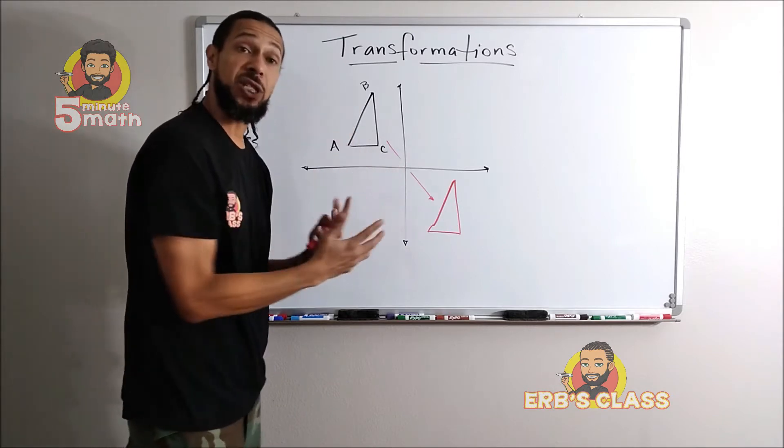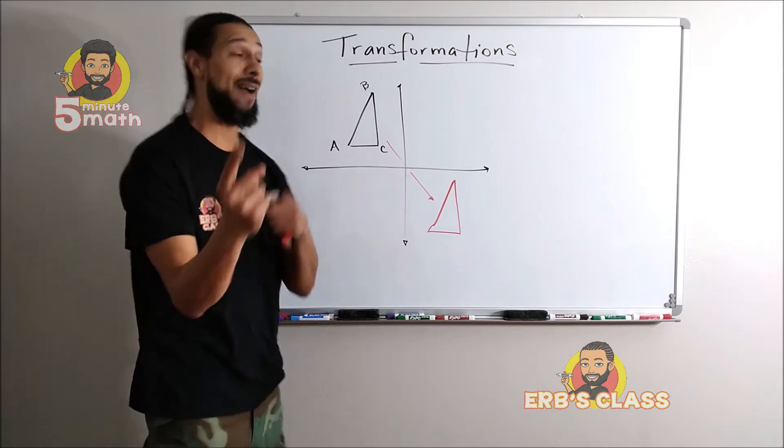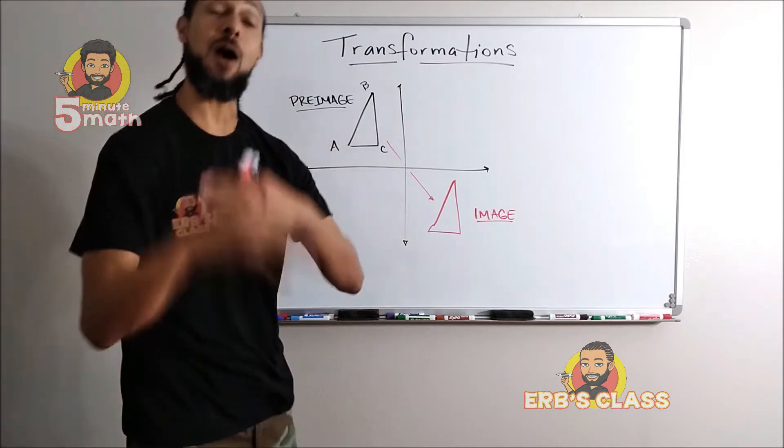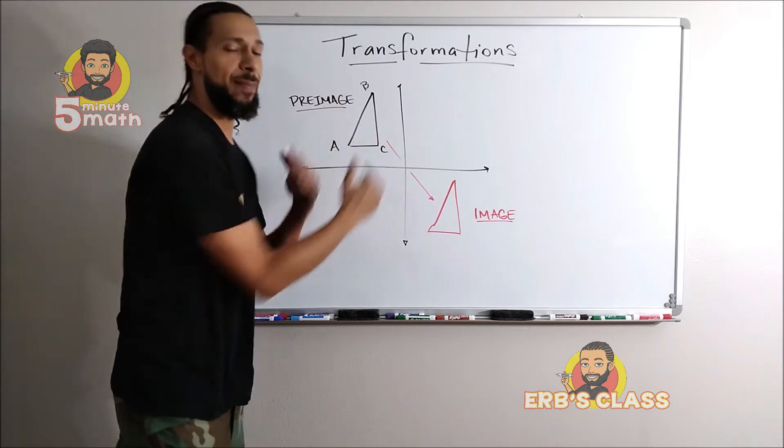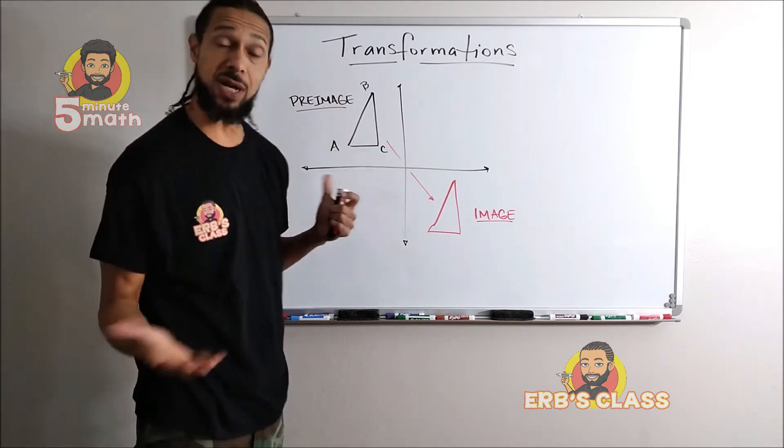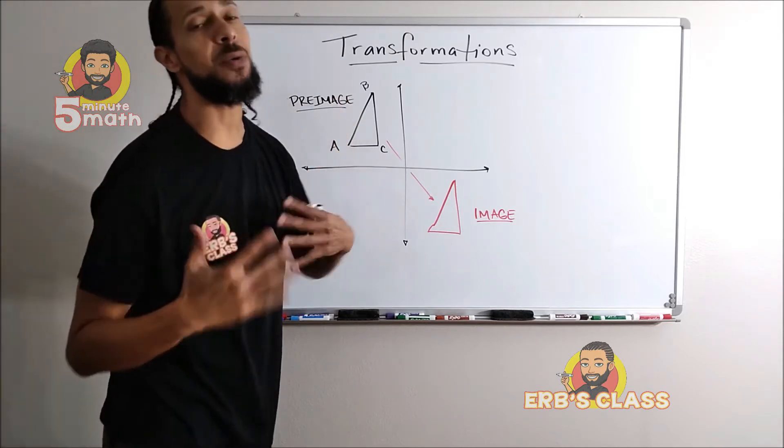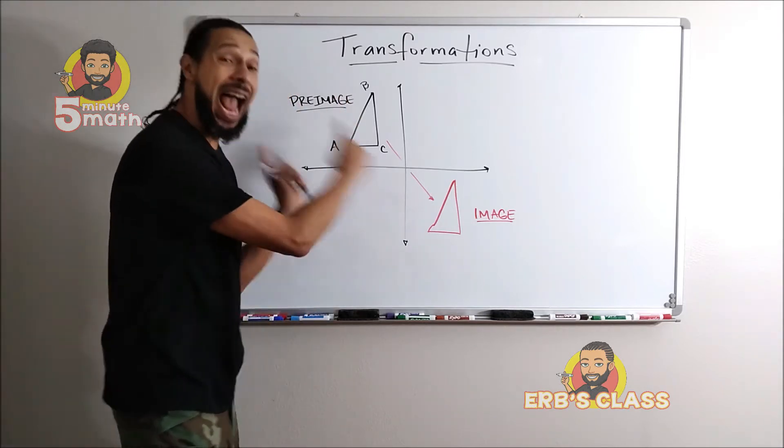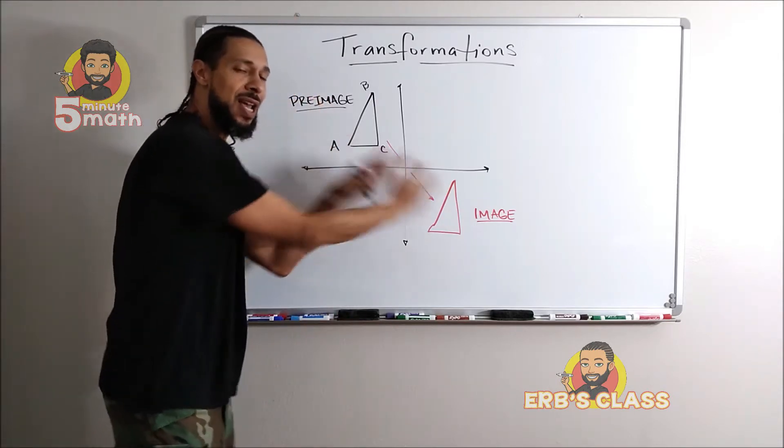So when we do that, the original picture has been transformed. And if the original picture or the original shape has been transformed or changed, so have the names of the points. Let's talk about that. Now first of all, the before picture is called a pre-image. Remember, pre, the prefix pre, means before. So this pre-image is the image before it was changed.